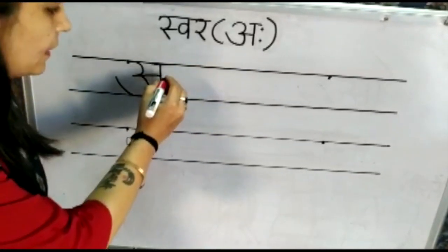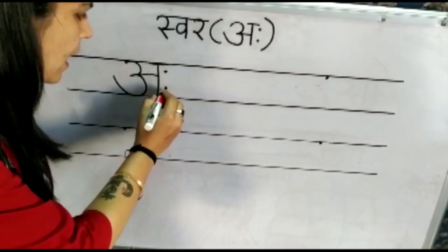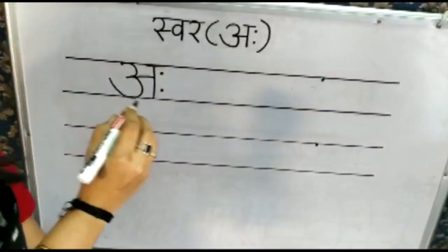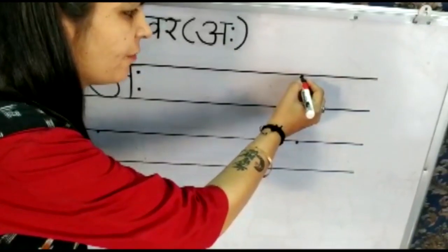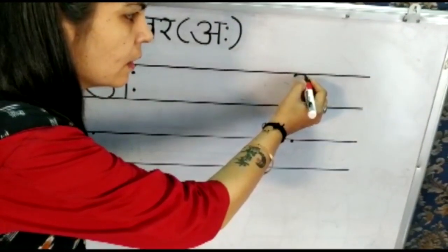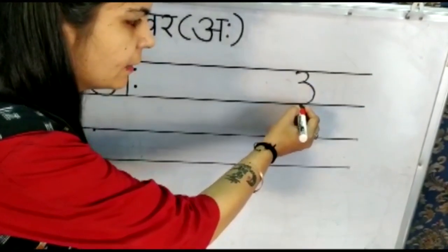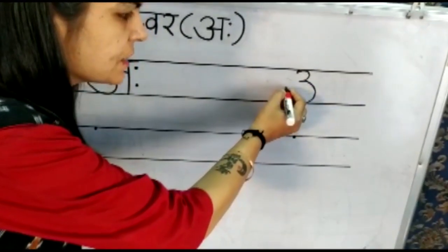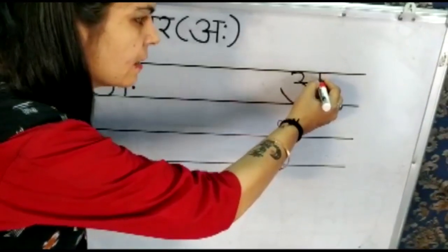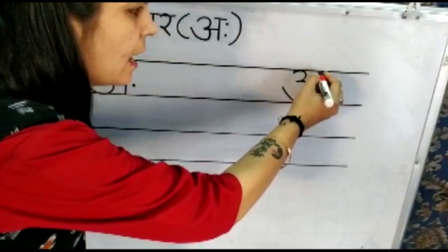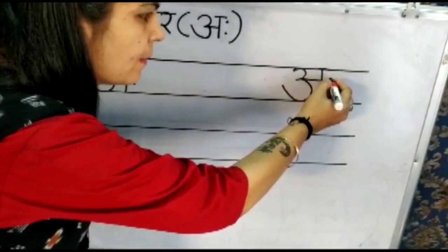Then you have to make two dots — Aha Kali! Again, from the dot you have to start: one curve, another curve, extend it up, sleeping line, standing line, sleeping line, then make two dots.